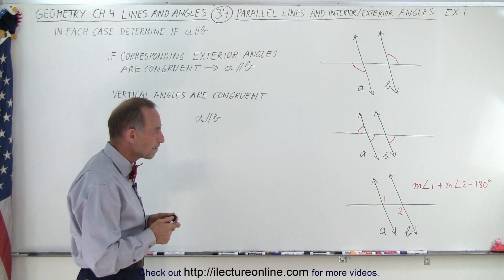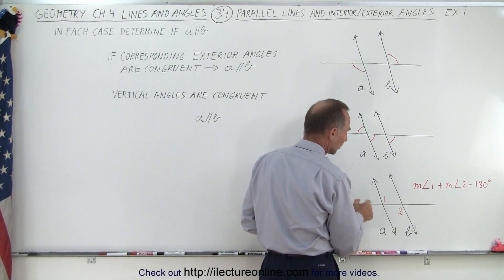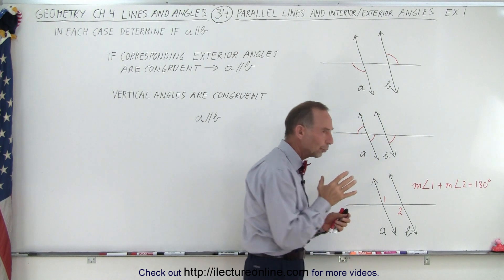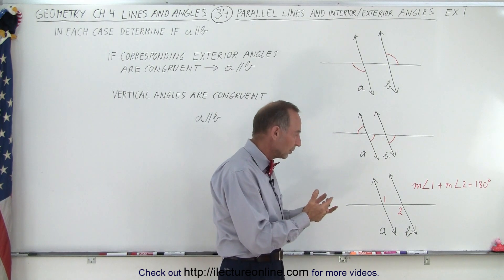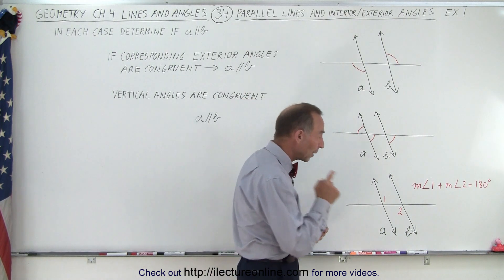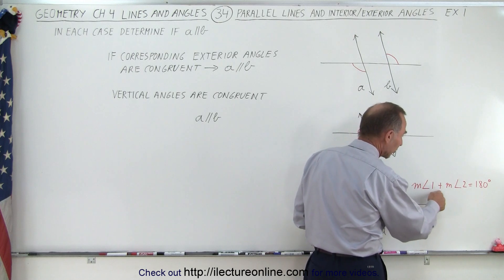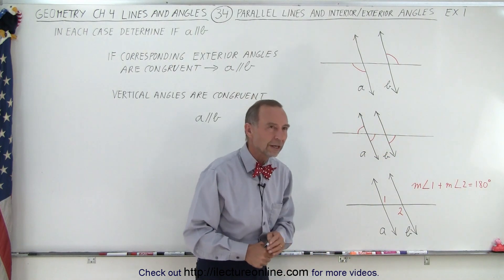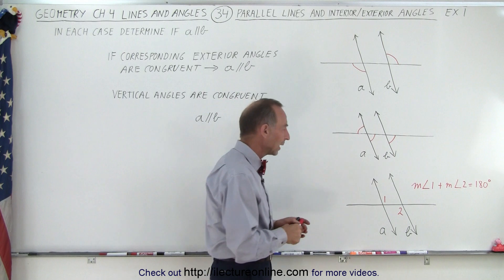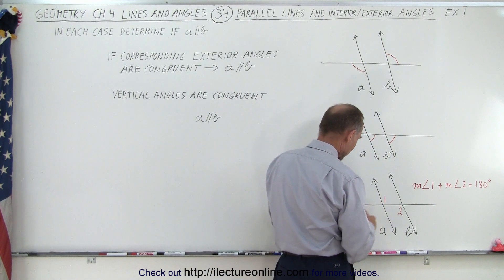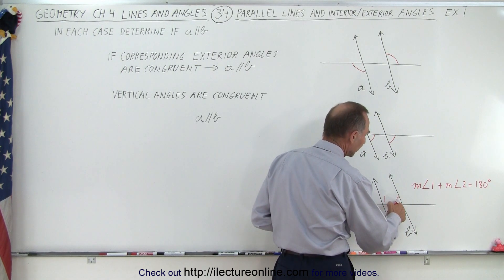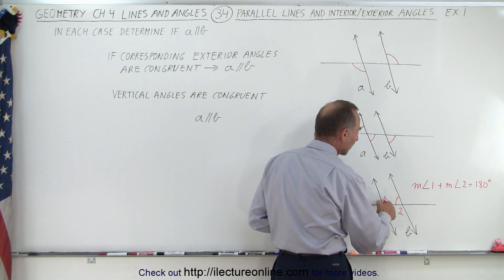Now in example three, they give us two angles — angle one and angle two. They're what we call corresponding interior angles, and we were not told that if corresponding interior angles are congruent then the lines must be parallel. But we are told that the measure of angle one plus the measure of angle two must equal 180 degrees, and of course supplementary angles add up to 180 degrees.